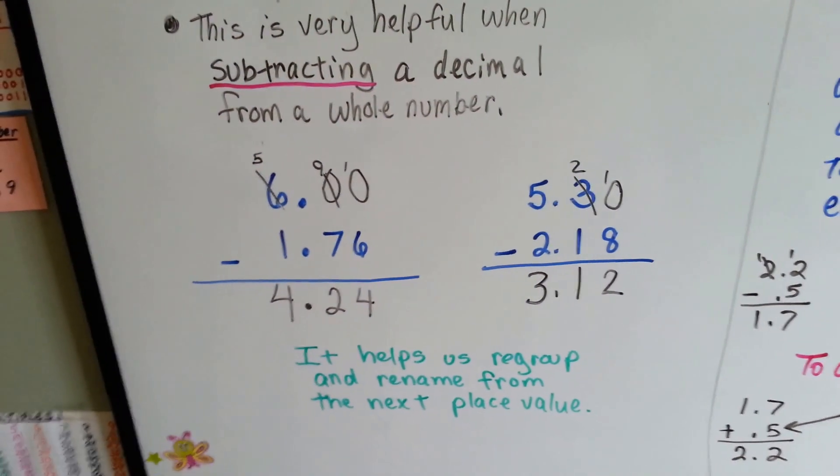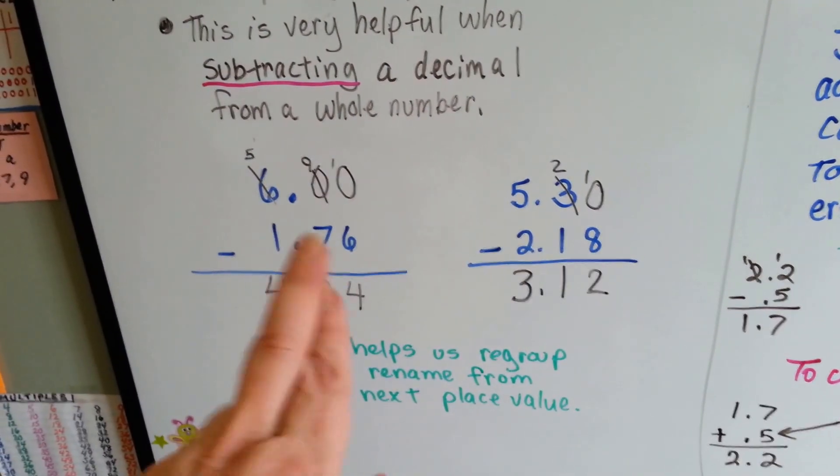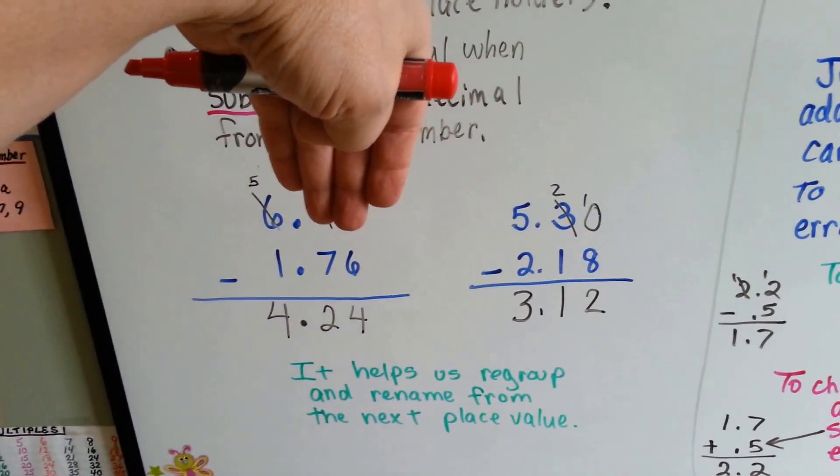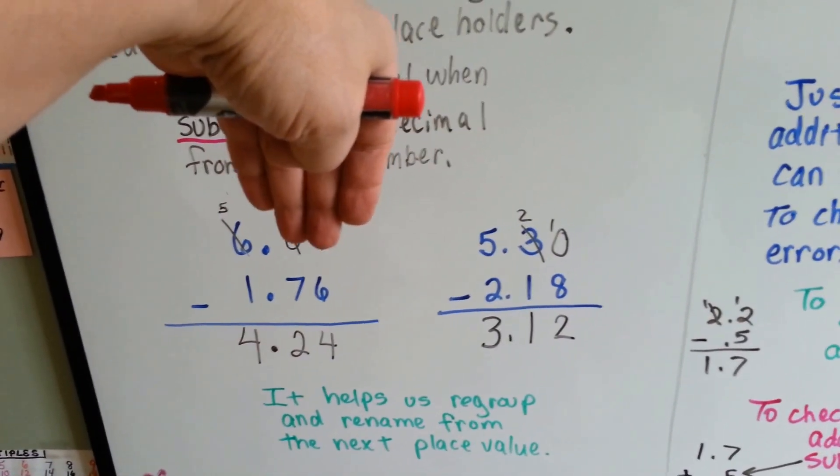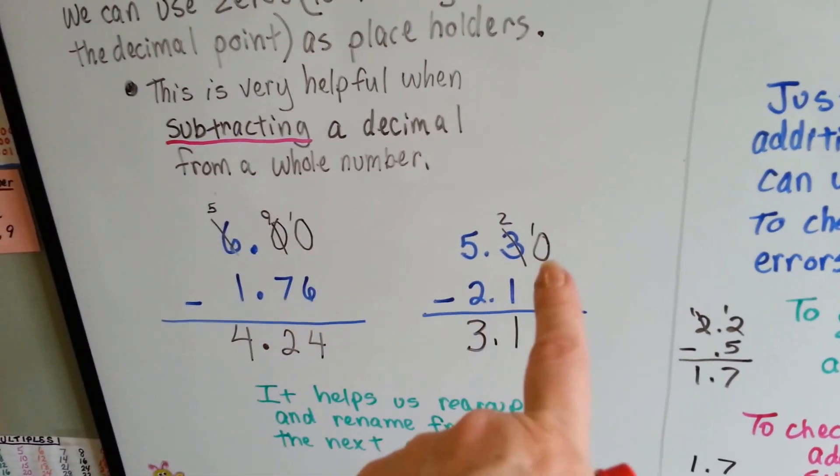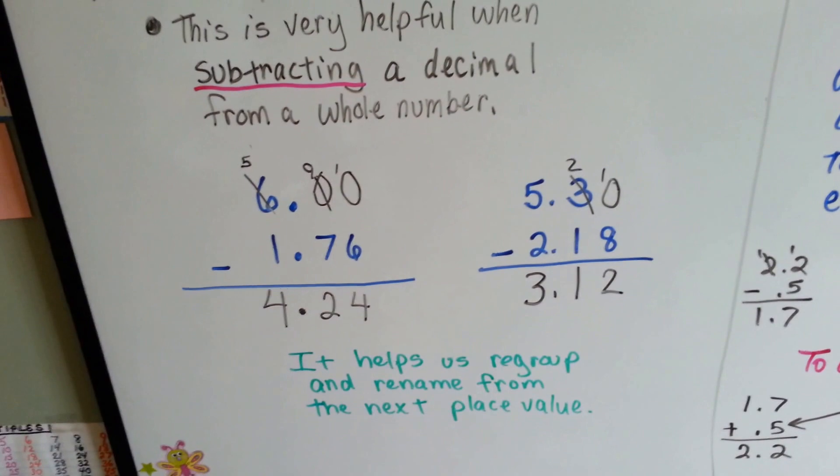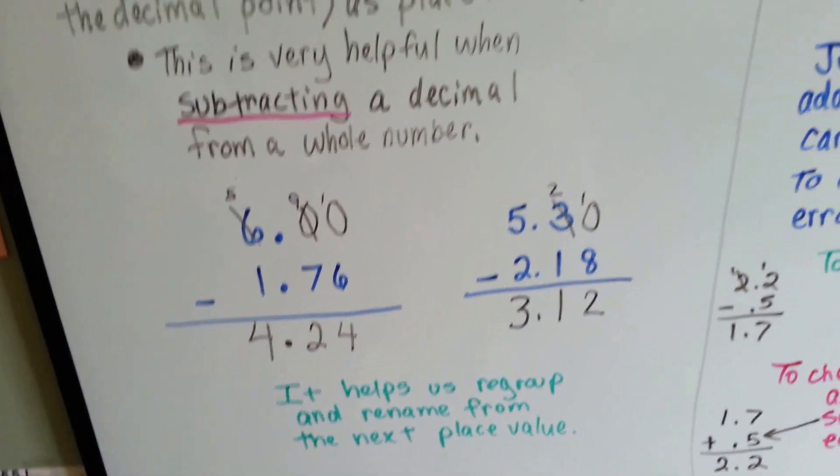It'll help us regroup and rename from the next place value. If those zeros weren't there, it would be hard to borrow, wouldn't it? If it's missing 1 or 2, it doesn't matter. You put in as many zeros as you need to help you find the answer.